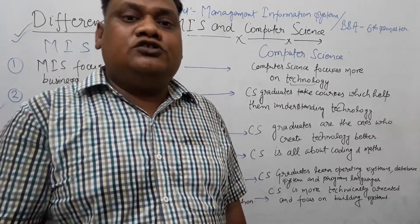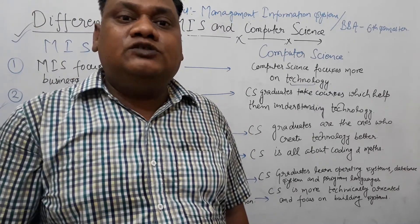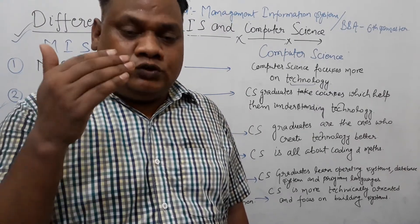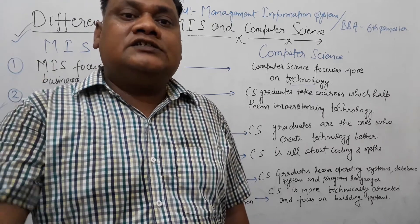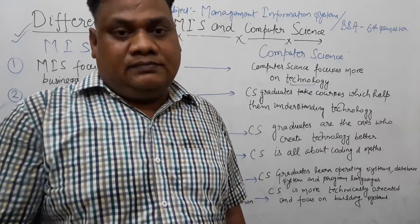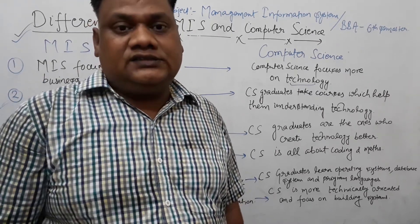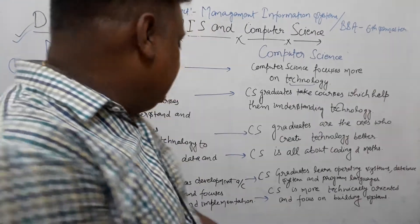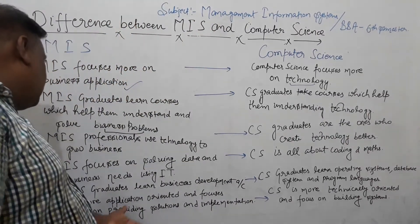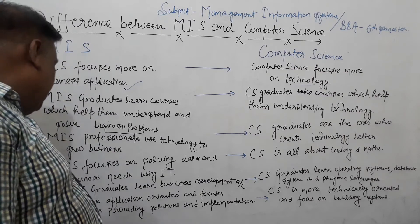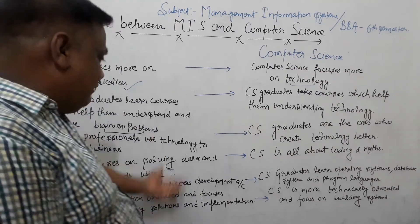At the top level, strategy and policy are handled. At the middle level management, information flows from lower level management. At the lower level, workers and operational staff are involved. MIS provides solutions across all levels and in all types of organizations.